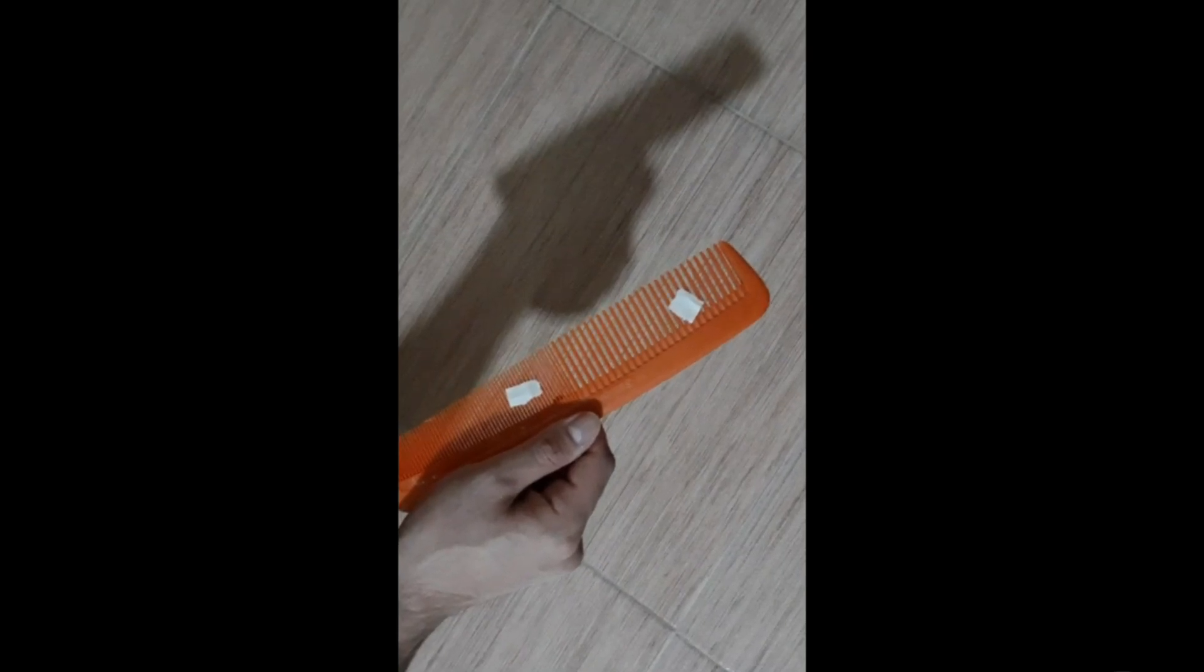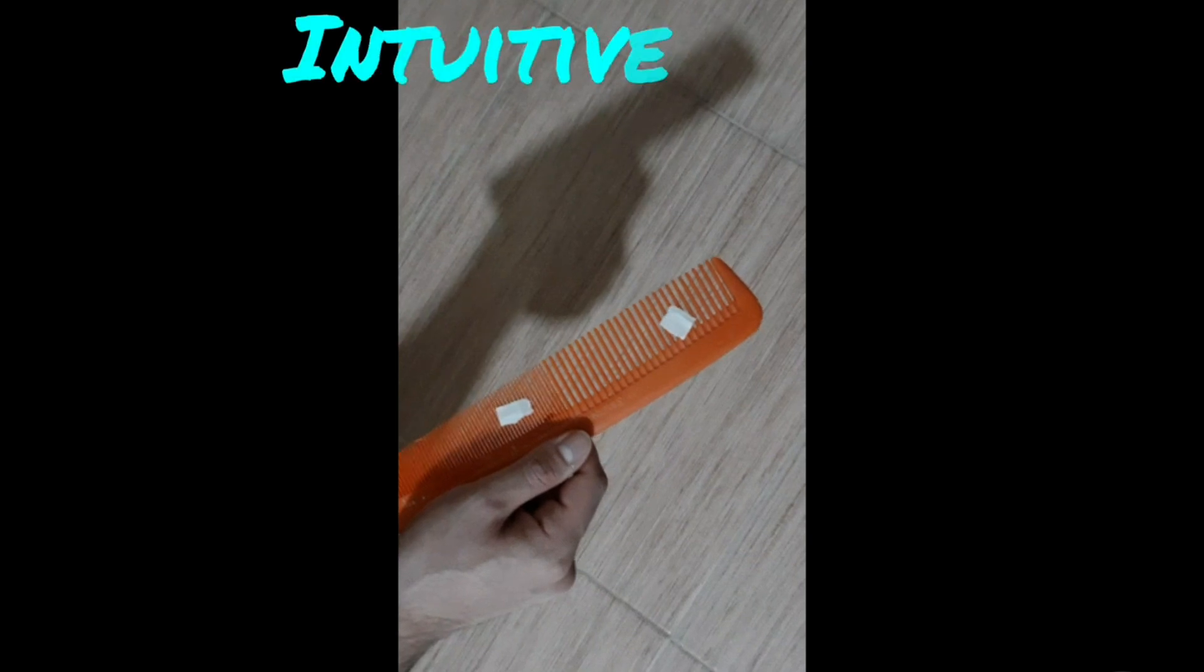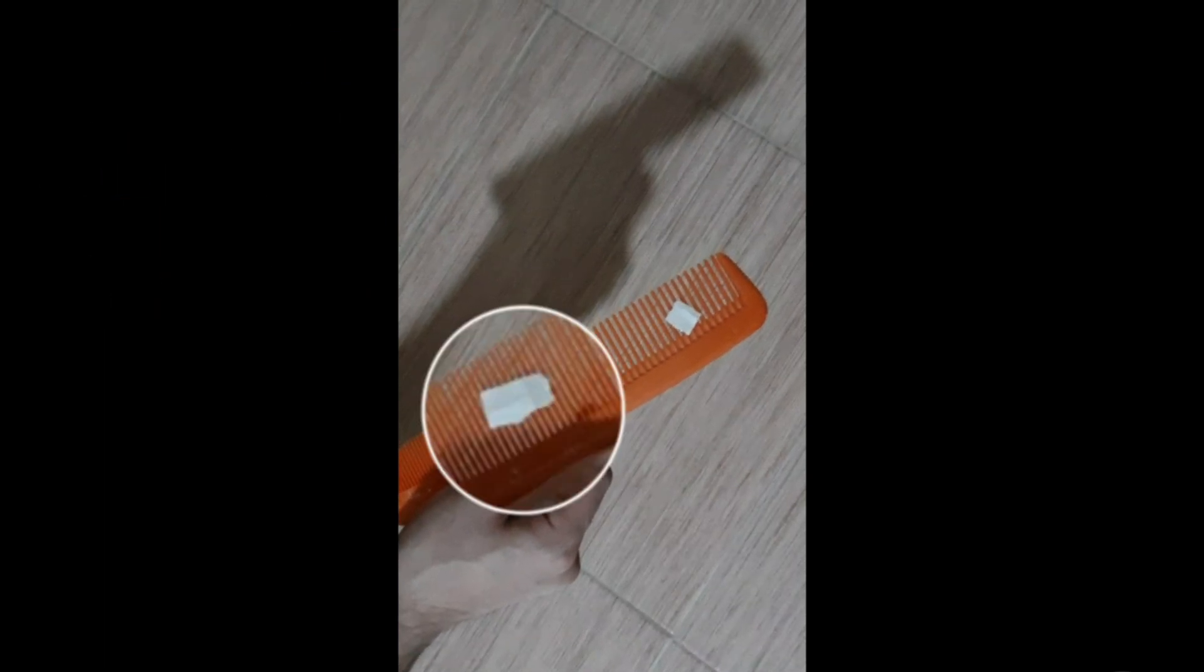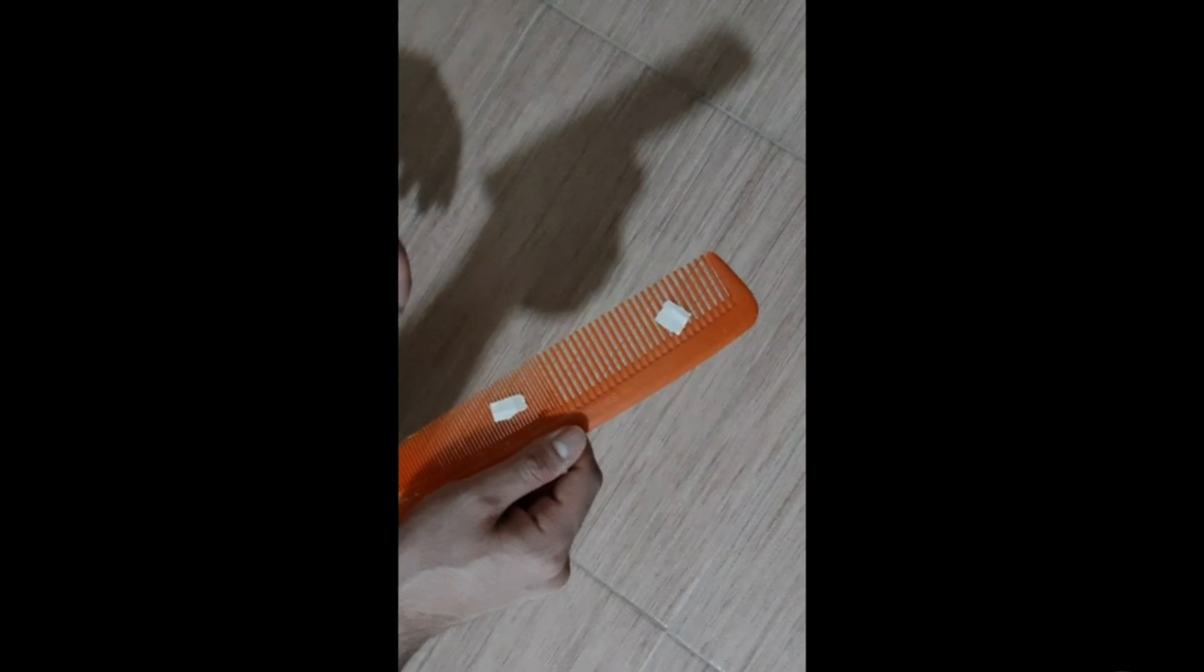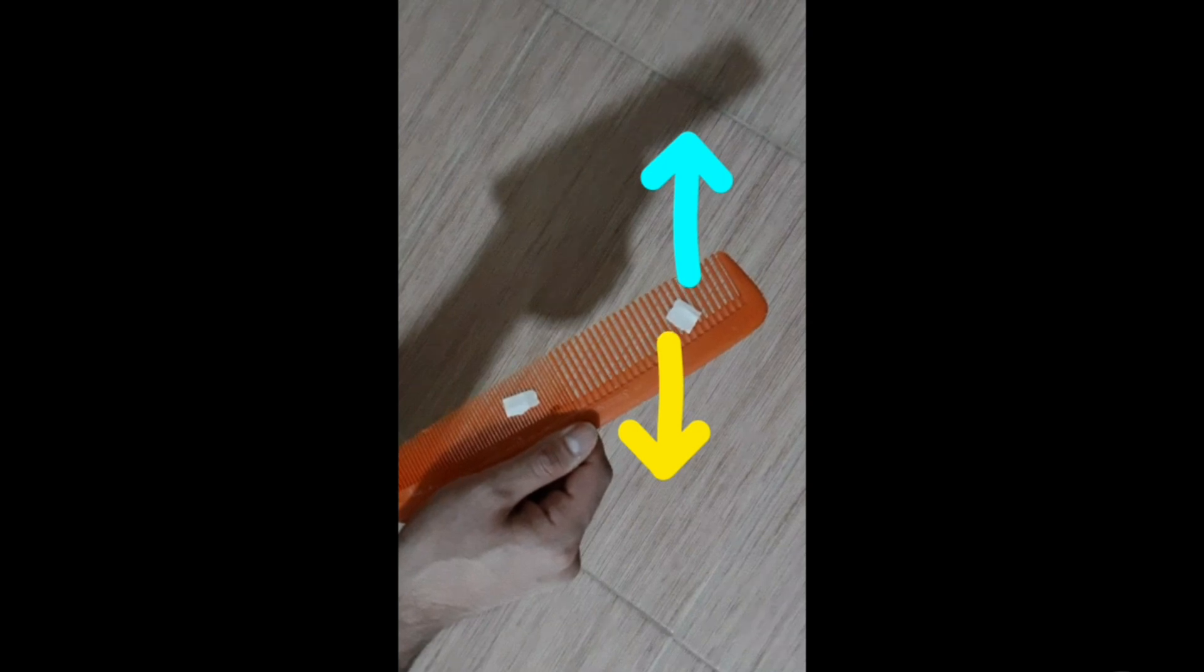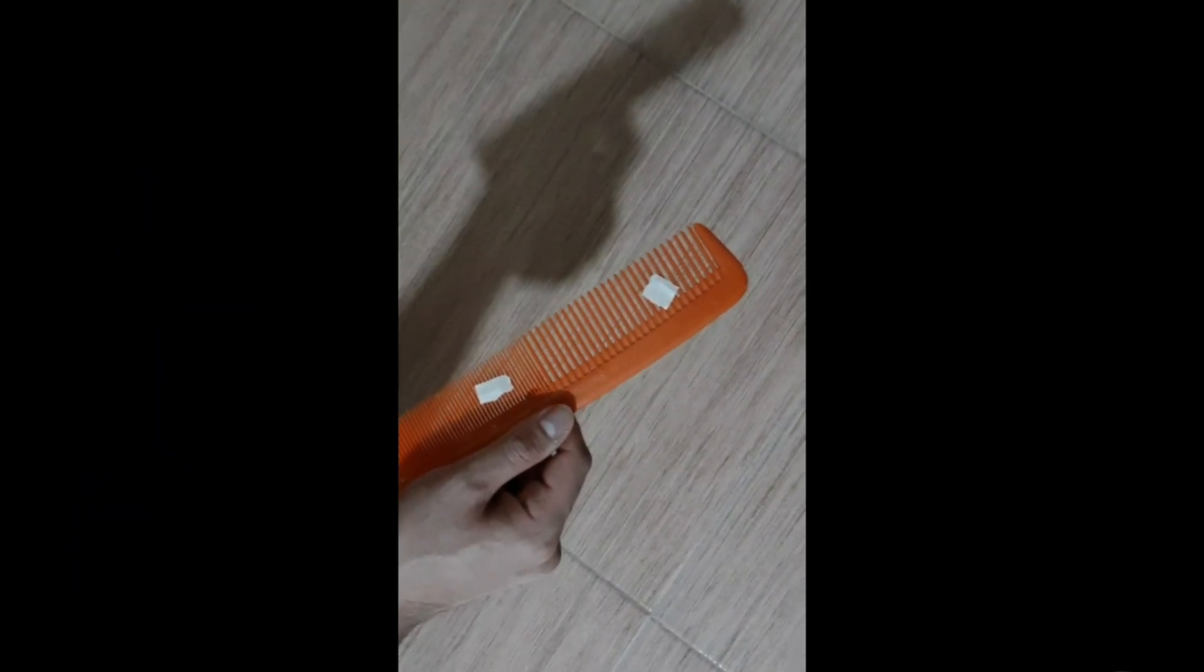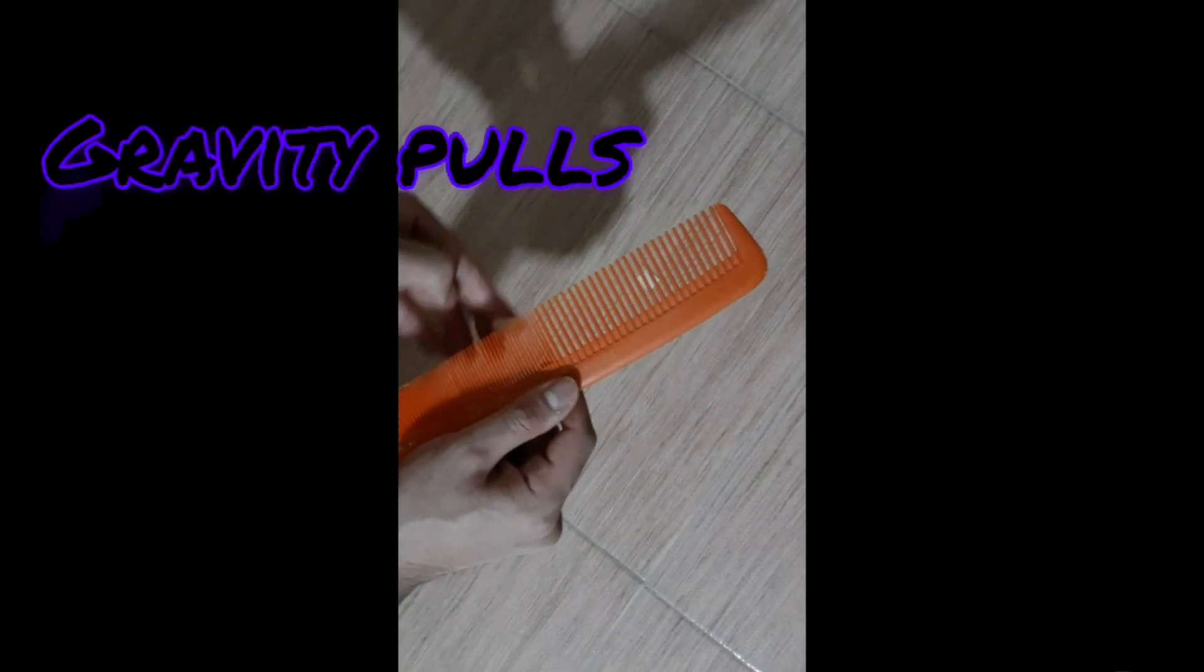You might have seen this experiment about the comb and papers before, but in this lecture I want to explain it in a more intuitive way. Imagine that we have some papers on a comb. Right now, the normal force because of the comb on the papers would oppose the gravity, and therefore the papers wouldn't fall. If you put the papers under the comb, then the gravity would pull them down and they would fall on the ground.